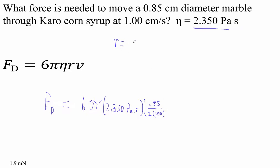So the radius is 0.85 times 10 to the minus 2, because it's centimeters, right, divided by 2. Let's figure that out. 0.85 e minus 2 divided by 2. And that is 4.25 times 10 to the minus 3.